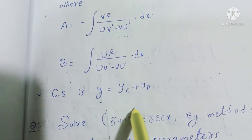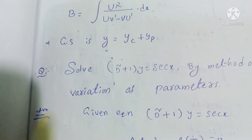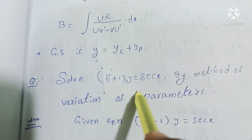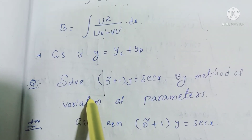The general solution is y = yc + yp. Problem: Solve (D² + 1)y = sec x. This method is very easy.